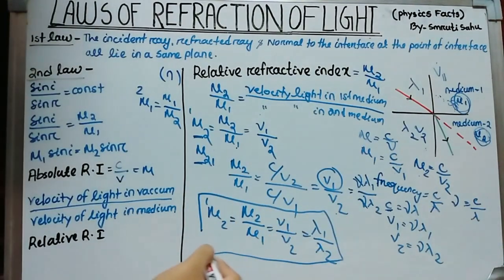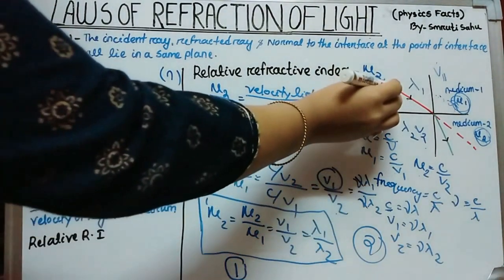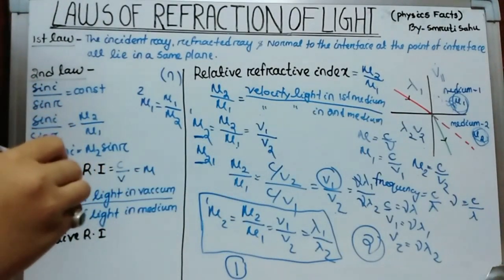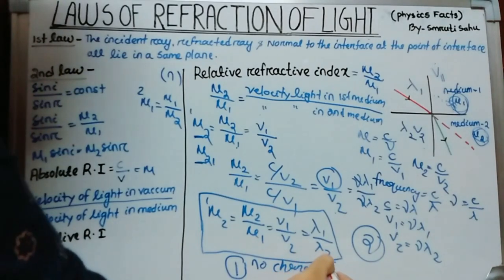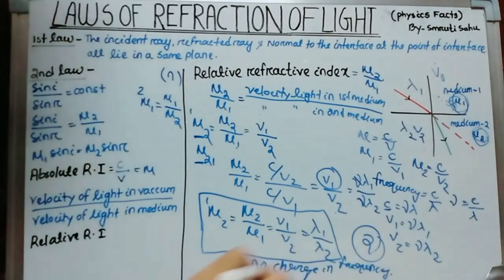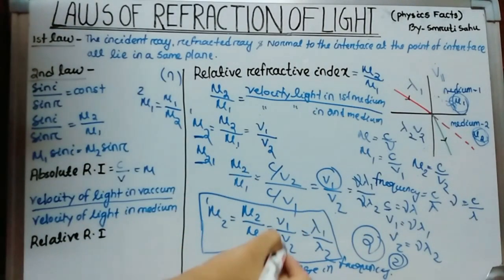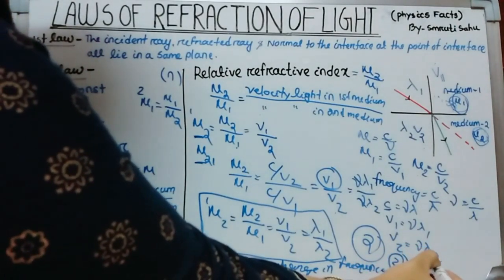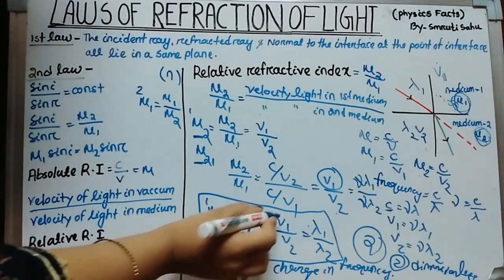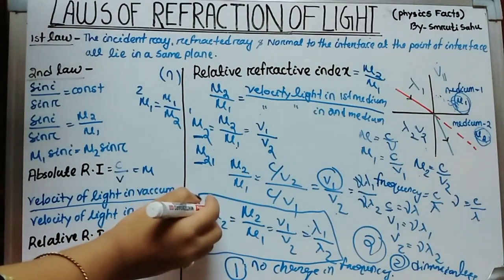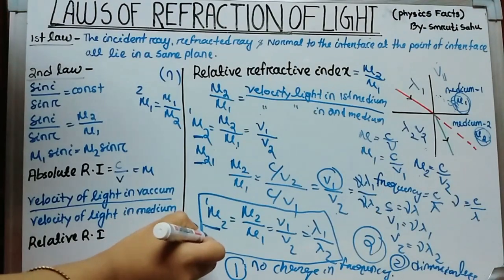Remember two important points. First, as light passes from one medium to another, the frequency of light remains constant — there is no change in frequency. Second, the refractive index is always a dimensionless quantity because it is the ratio of two similar quantities. Therefore, refractive index has no dimension and no unit.